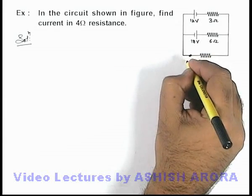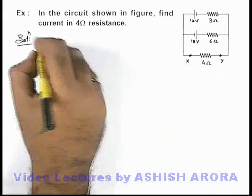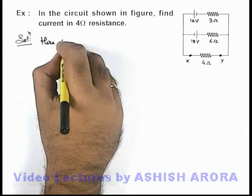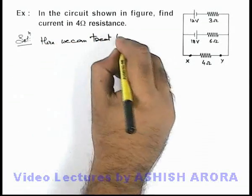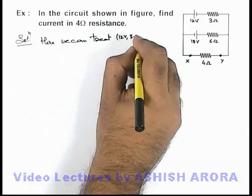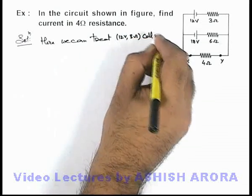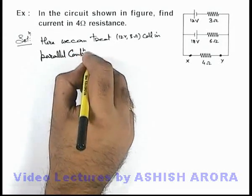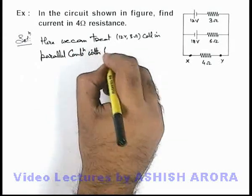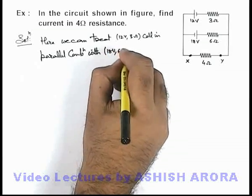In this situation, say if these terminals are x and y, then we can treat 12 volt 3 ohm cell in parallel combination with 18 volt 6 ohm cell.